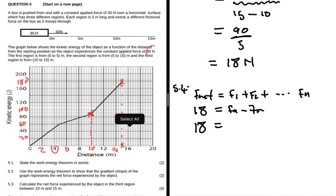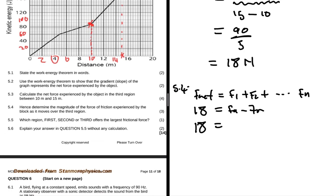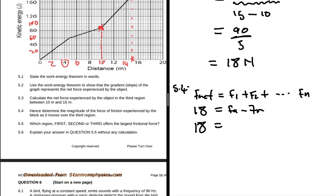So we have 18 equals to 30 minus Fr. So if we take 30 to the other side, we get minus 12 equals to minus friction, so this will give us a frictional value of 12 newtons.